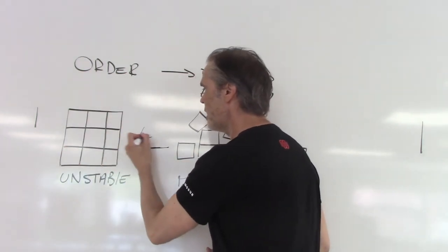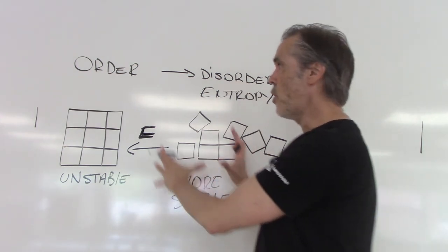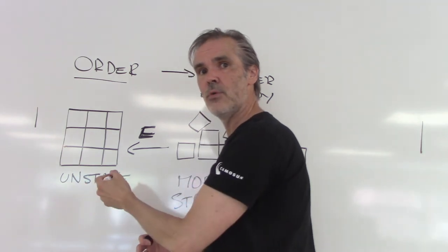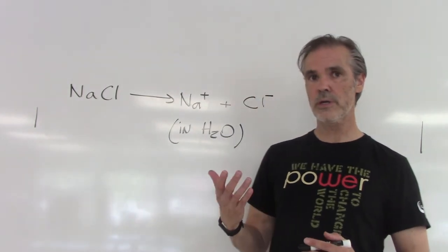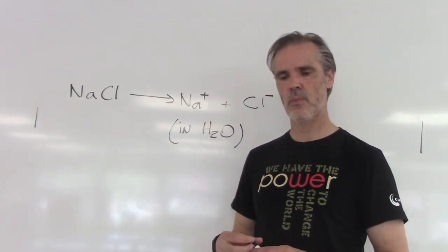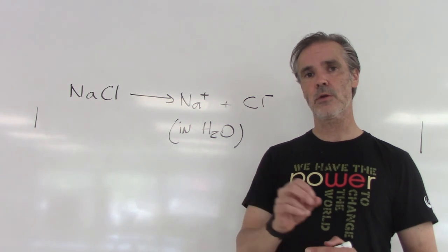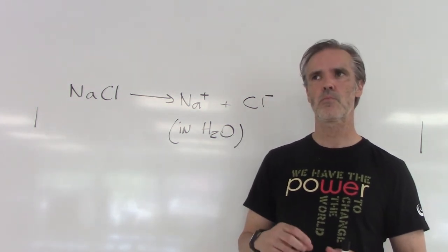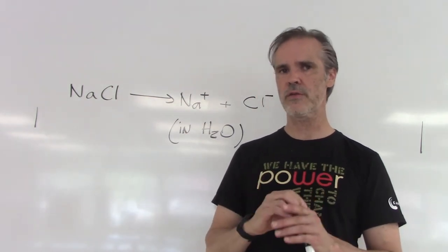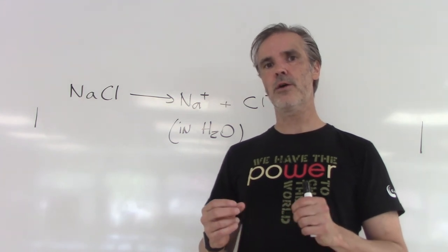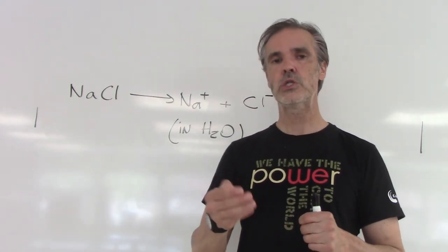In order to bring a system back from a disorganized state to an organized, ordered state — which is unstable — we need to spend energy. When we look at chemical and biochemical reactions, there are two types: some reactions are spontaneous, meaning they happen almost by themselves, and there are non-spontaneous reactions that we need to force into a certain state.